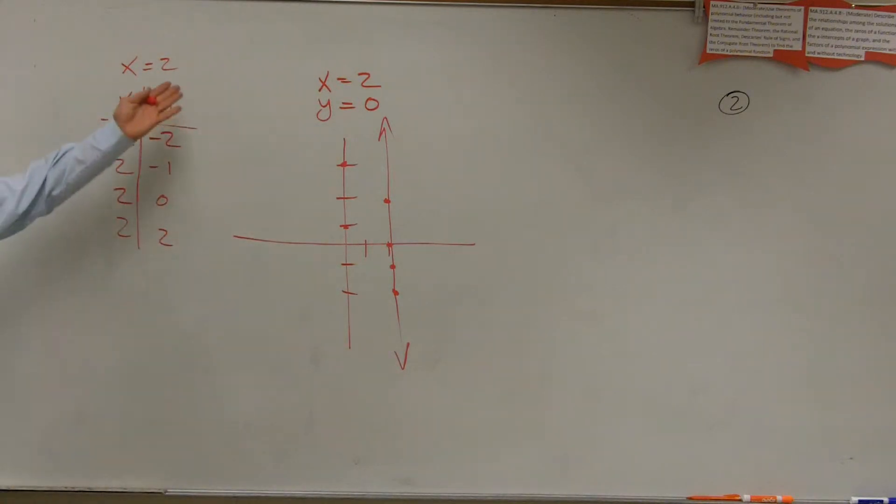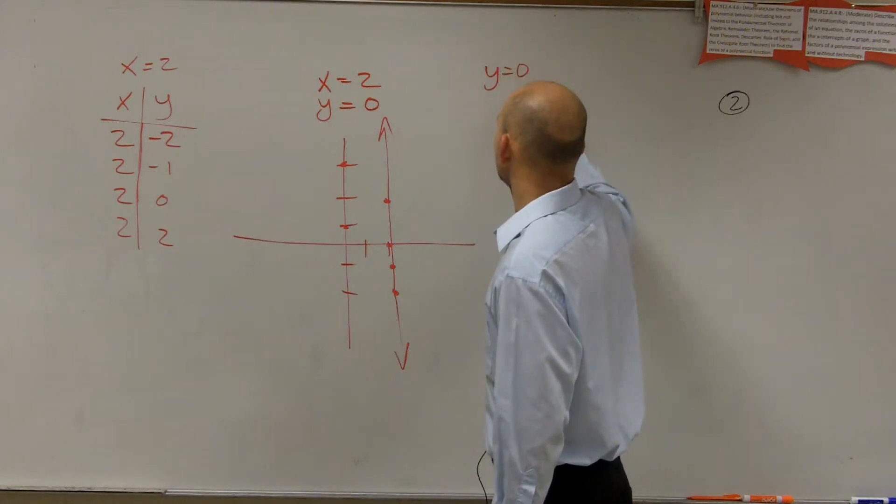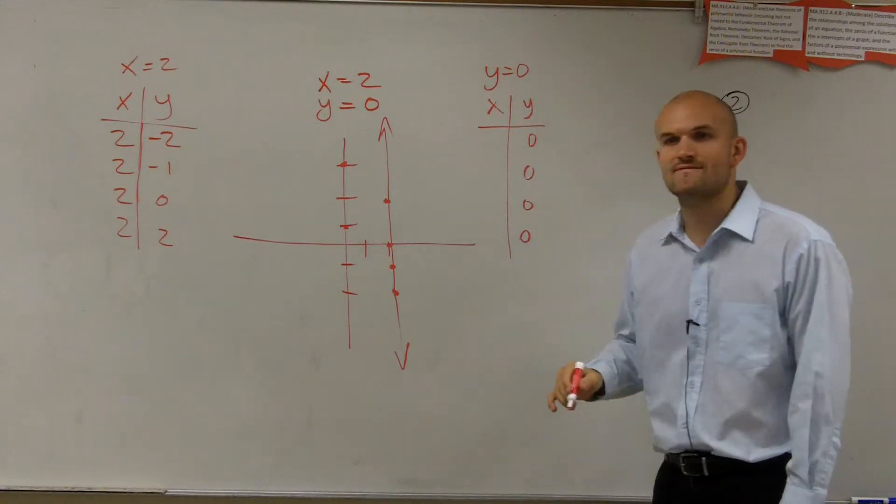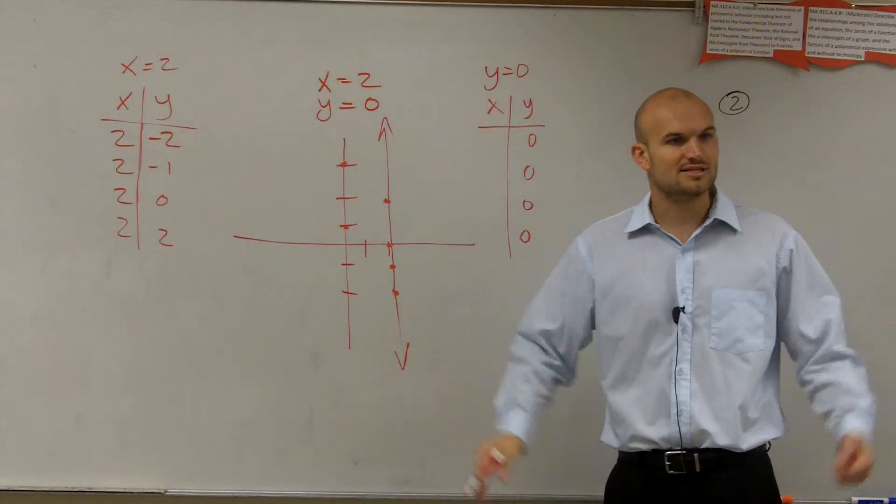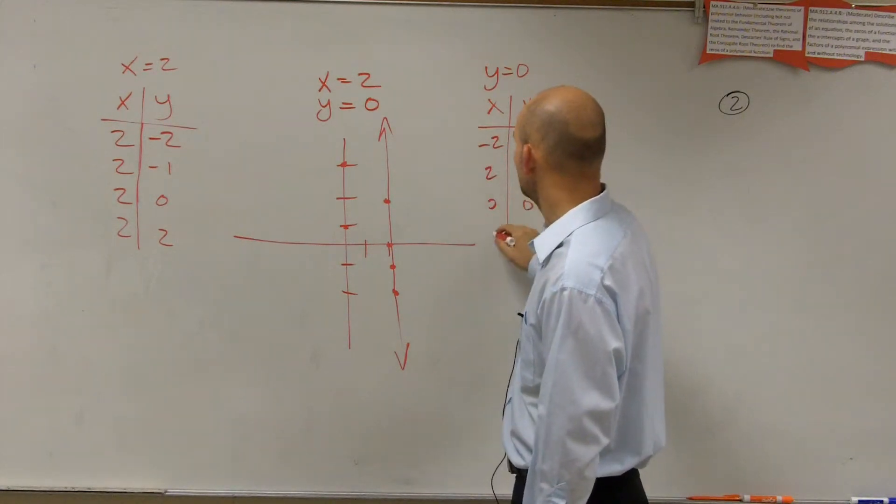Then let's go and do a table for y equals 0. Now what is y always equal? 0. It doesn't matter what value of x I pick. But let's pick some values of x. Let's pick negative 2, let's pick 2, 0, 1.